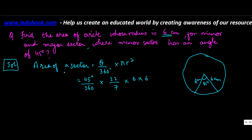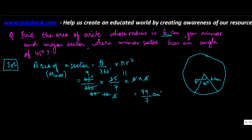So the area of the minor sector: 6 goes into 36, 60 times; 6 goes into 60, 10 times; 5 times 2 is 10; 5 times 9 gives this; and 2 goes into 22, 11 times. You get 99 upon 7 cm squared. So the area of the minor sector is 99/7 cm².